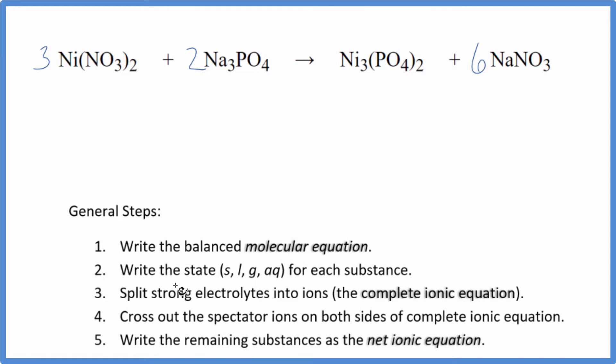Next, we write the state for each substance. So if you know your solubility rules, nitrates are very soluble, so we're going to put an aq after this. So that's going to dissociate into its ions. Phosphates in general, they're insoluble unless they're bonded to something like sodium or potassium or the ammonium ion. So this is going to be soluble as well. It's going to dissociate into its ions.